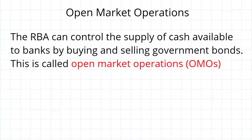First we need to define what open market operations are. This is the process of the RBA controlling the supply of cash available to banks by buying and selling government bonds.